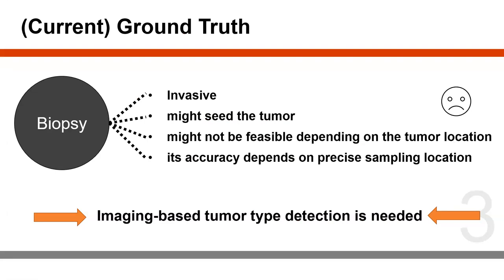Currently, the ground truth is biopsy. However, it comes with drawbacks. Biopsy is invasive, and it might not be feasible depending on the tumor location, which is the most important reason for switching to imaging-based subtype identification. Its accuracy also depends on precise sample indication. Therefore, imaging-based tumor type detection is required.